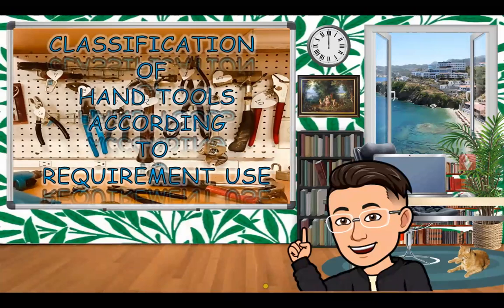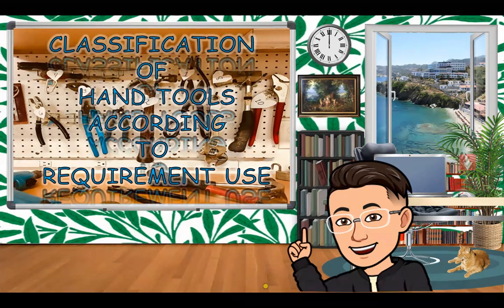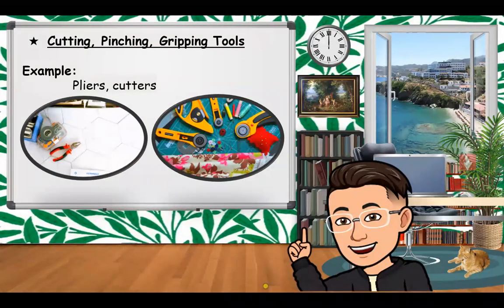Let's start with the subtopic on the classification of hand tools according to requirement use. The first classification is cutting, pinching, and gripping tools — for example, pliers and cutters. These tools are used not only to cut a physical object into pieces but also to remove metal or wood from a workpiece by means of shear deformation, and to grip objects using leverage.